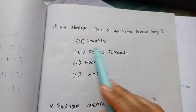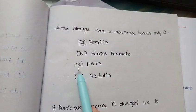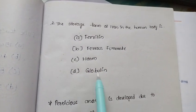Option A, ferritin. Option B, ferrous fumarate. Option C, heme. Option D, globulin.